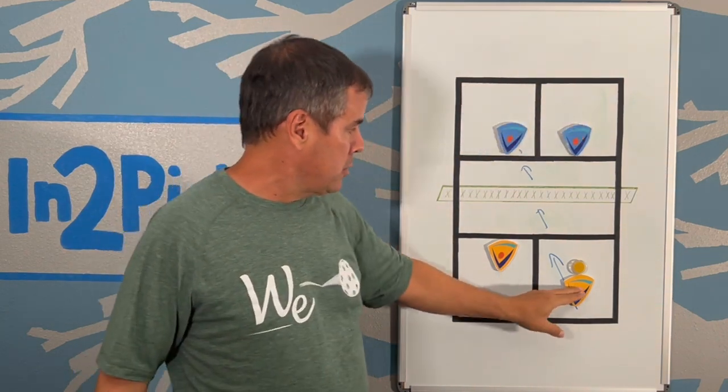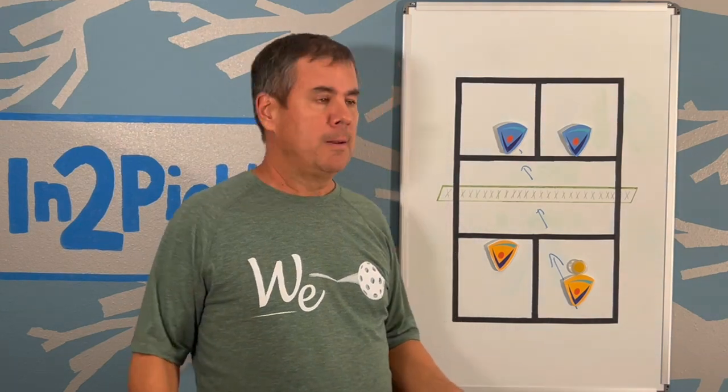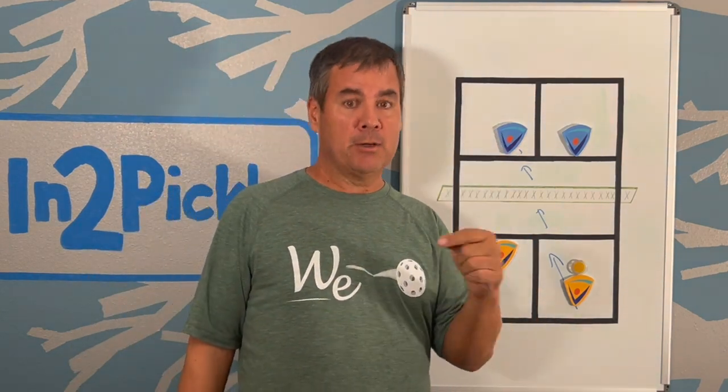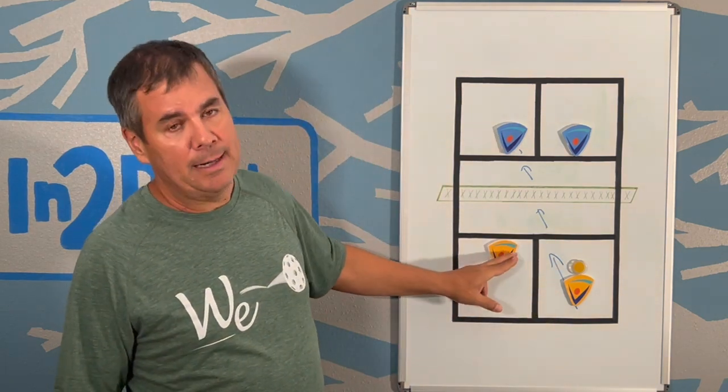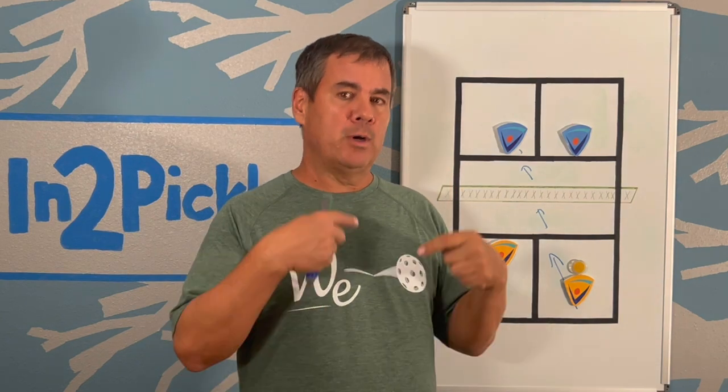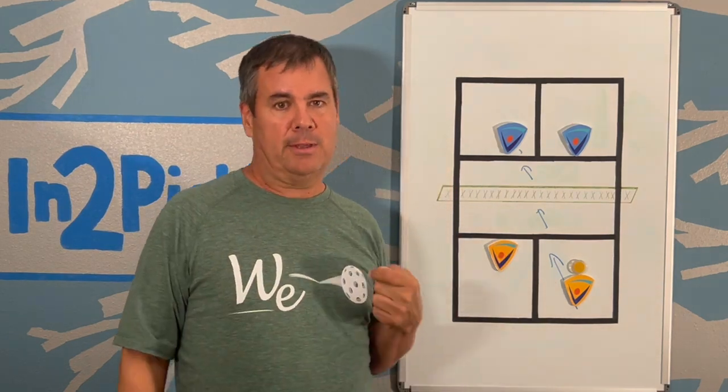And then what you're trying to do is set up a situation where the next shot is going to be your put away shot. Rather than trying to hit it, win it in one shot here, you're going to try and win it in two shots by going to the player who hasn't made it up to the no volley zone line.